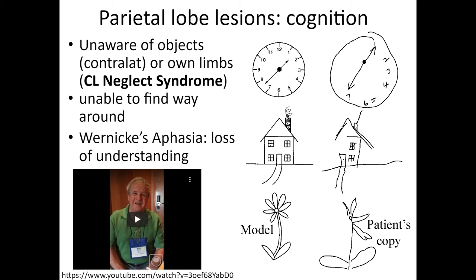Damage to portions of the parietal lobe can also cause contralateral neglect, visible in drawings of clocks, houses, and plants — the brain perceives only half the image. To the patient, these incomplete drawings look complete. These individuals may only shave half their face, comb half their hair, or apply makeup to only half their face — a fascinating example of how sensory area damage distorts perception of the world around us.